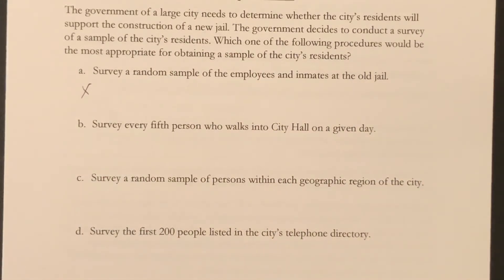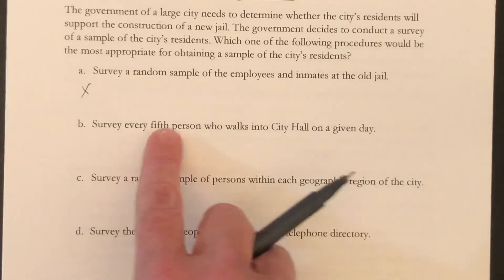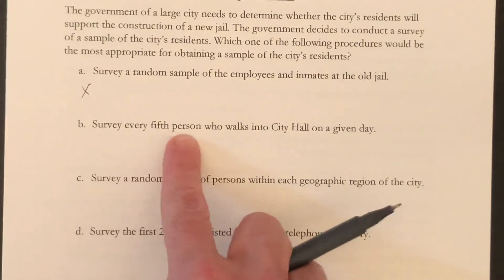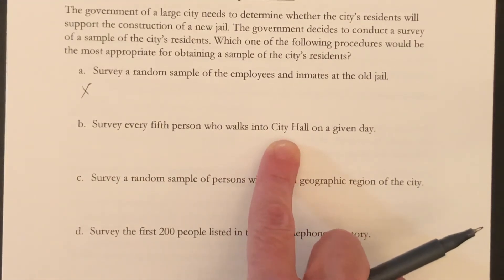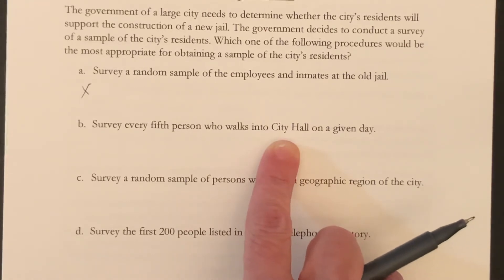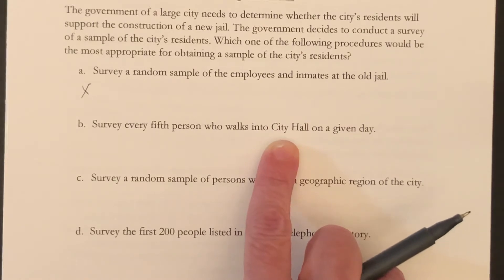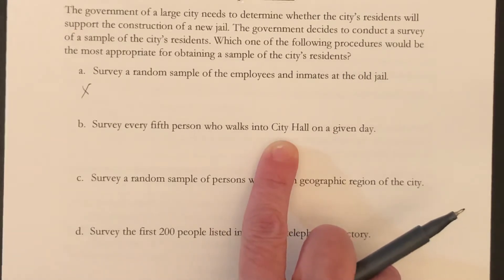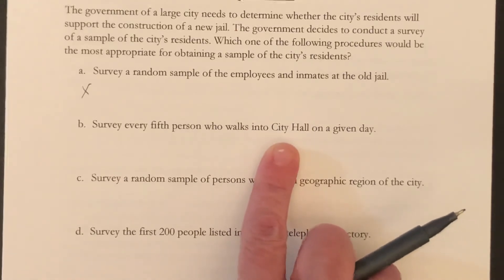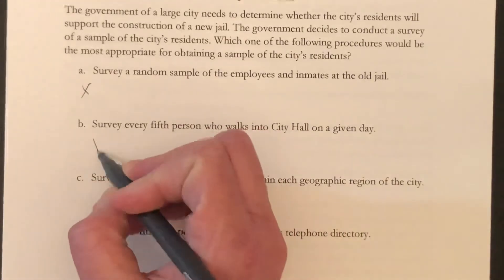Option B: survey every fifth person who walks into City Hall on a given day. That's every fifth person, which is pretty random, and would be equal chance — except for the fact that you have to go to City Hall. The majority of city residents don't go to City Hall often; only people who work there would have a much higher chance of being chosen, or people who happen to have business there that day. This one is also not good.